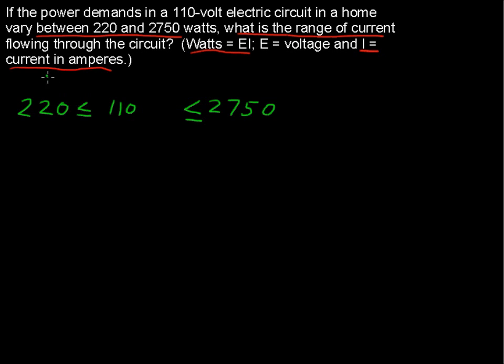So we have, I'll write that up here, watts equals EI, just to rewrite what I've got there. And that's why I've got 110 for E, and then I is our unknown. I'm going to write the I like that, so it doesn't get confused with a 1.